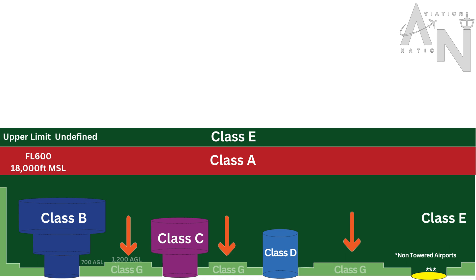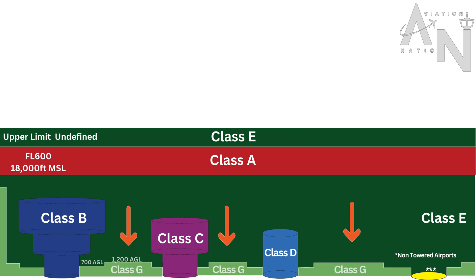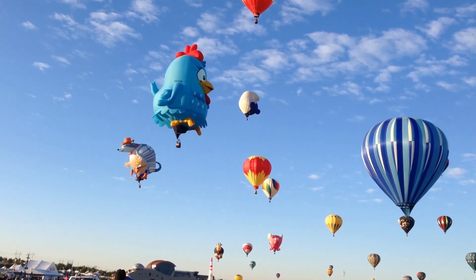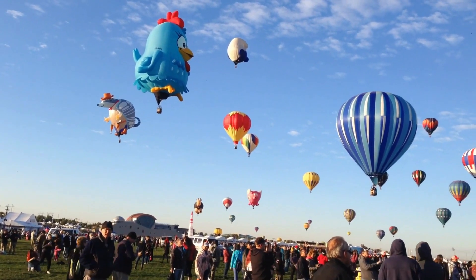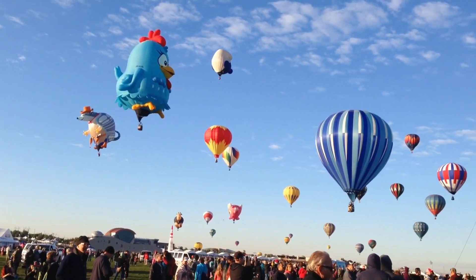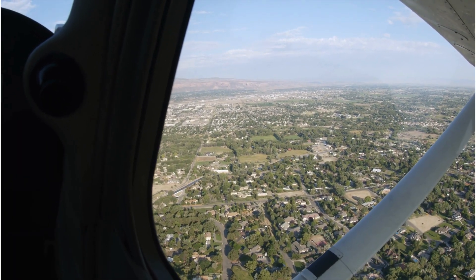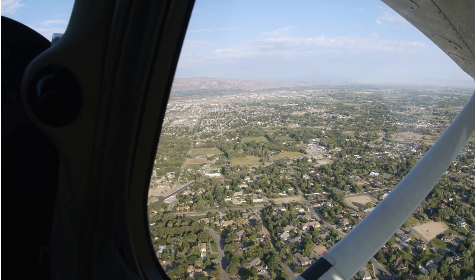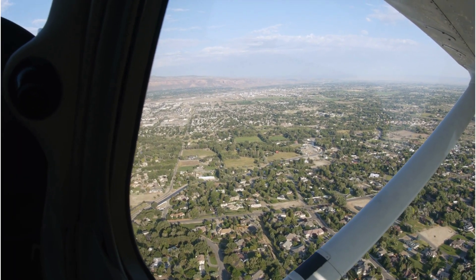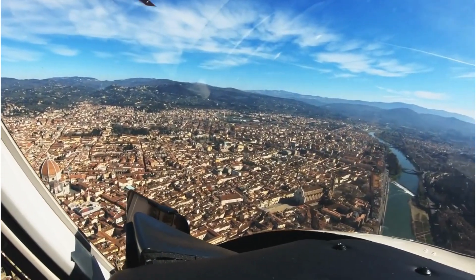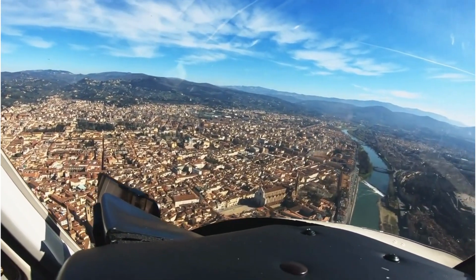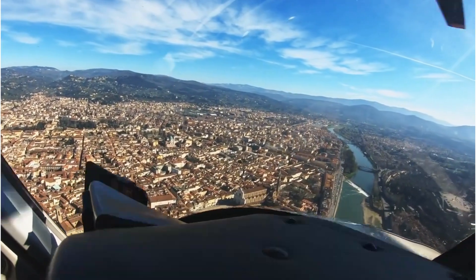Finally, there's Class G airspace, also known as uncontrolled airspace. It extends from the surface up to either 700 feet or 1,200 feet above ground level, depending on your location. In Class G airspace, there are no specific requirements for communication with ATC, making it suitable for VFR flights.